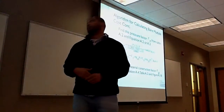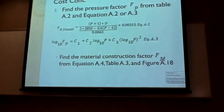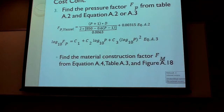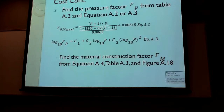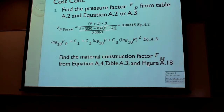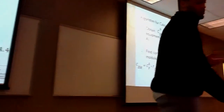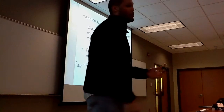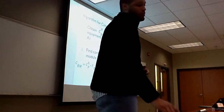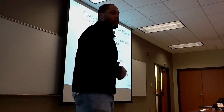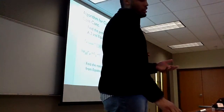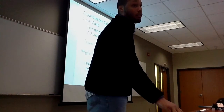The third step would be to find the pressure factor using equations 8.2 and 8.3, and also table 8.2 in the back of the book. Your P would be your actual pressure, and your D would be your vessel diameter for equations 8.2 and 8.3. After finding your F sub P, you would want to find your construction material factor, F sub M. This would also use equation 8.4, shown in table 8.3 and figure 8.18.